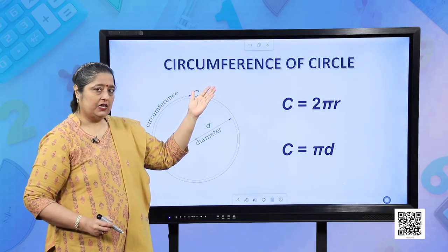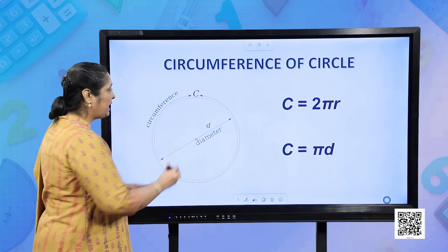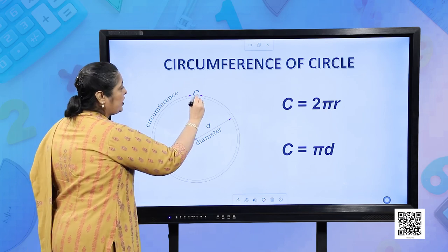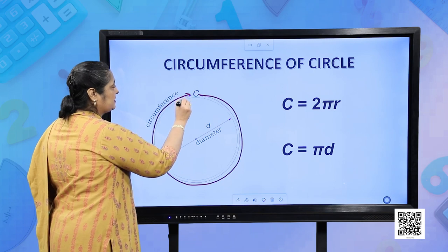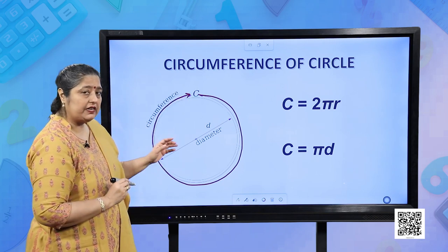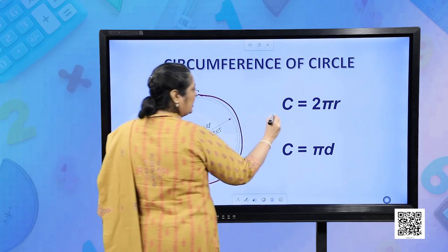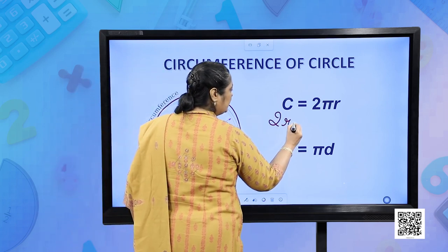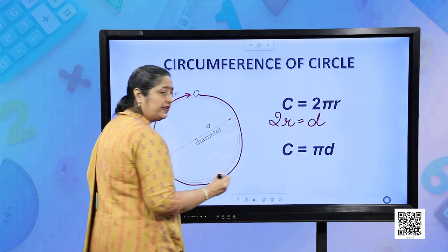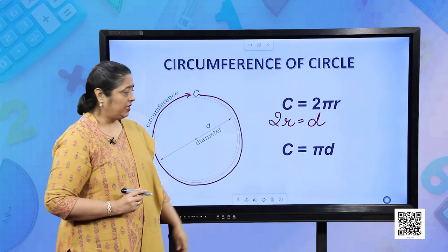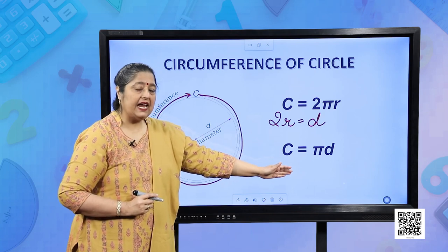Circumference of the circle — you have already studied about this. Circumference is the boundary of the circle, given by the formula 2πr. You all know that twice of r is equal to d, so twice the radius equals the diameter. We can also say circumference is equal to πd.